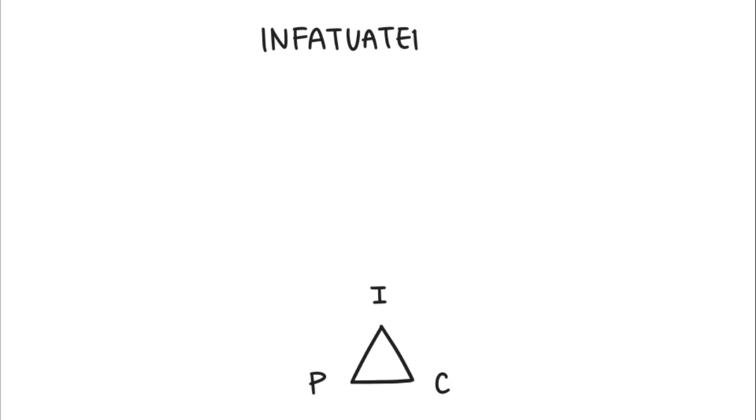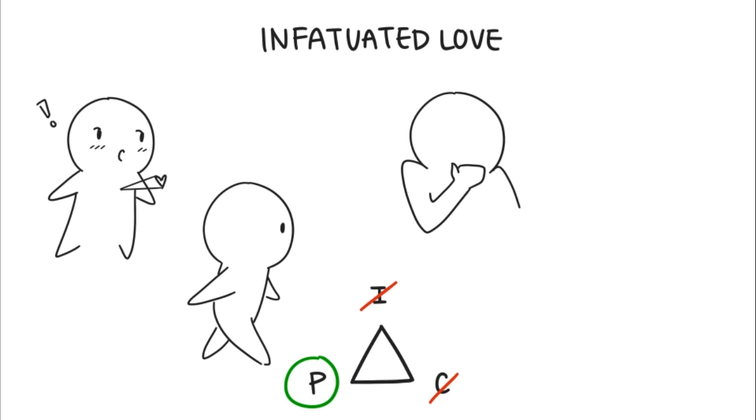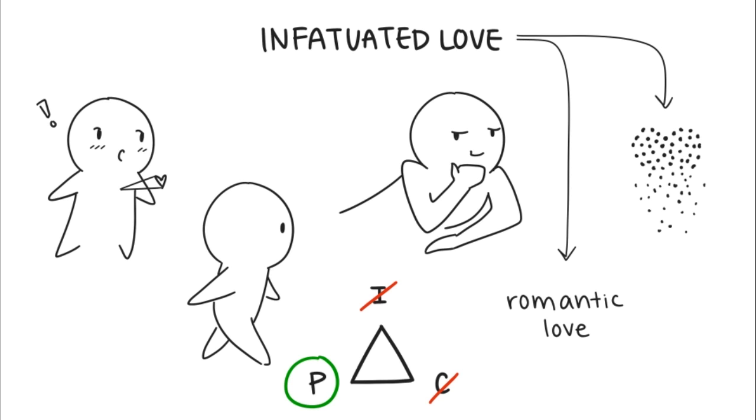Three: infatuated love. Infatuation occurs when passion is present and both intimacy and commitment is absent. Crushes fall under this category. Solely sexual relationships are also included as they're only bounded by carnal desires and nothing more. This is the most common root of romantic love as it's believed that intimacy develops over time. But if neither intimacy nor commitment develops, this type of love can fizzle over time.